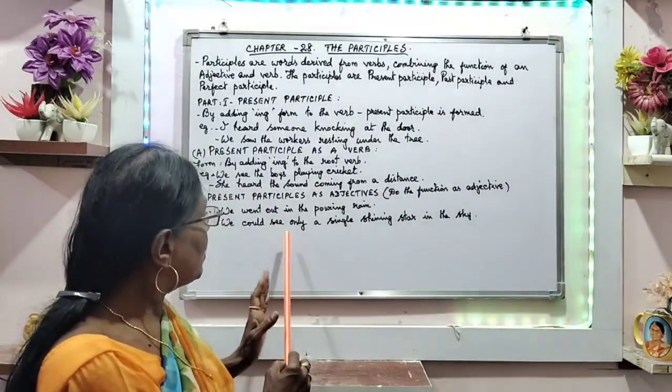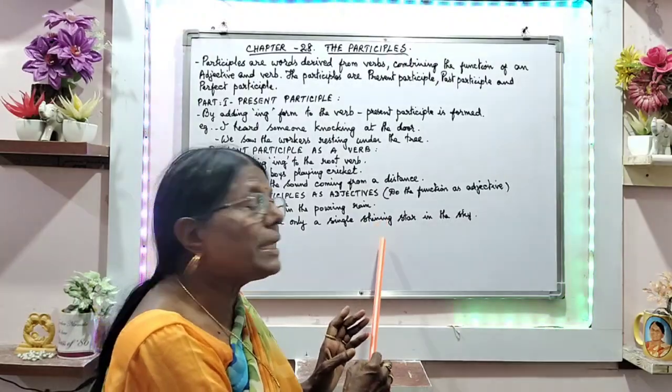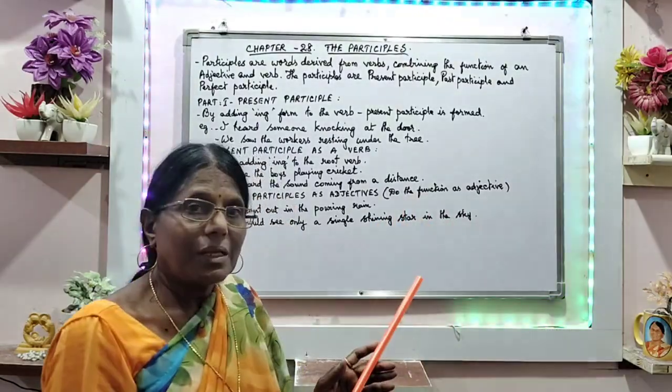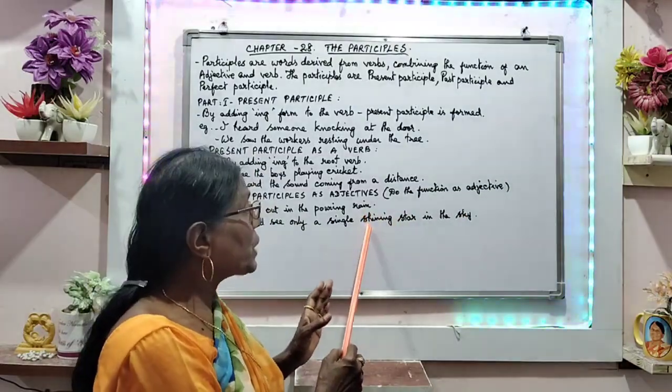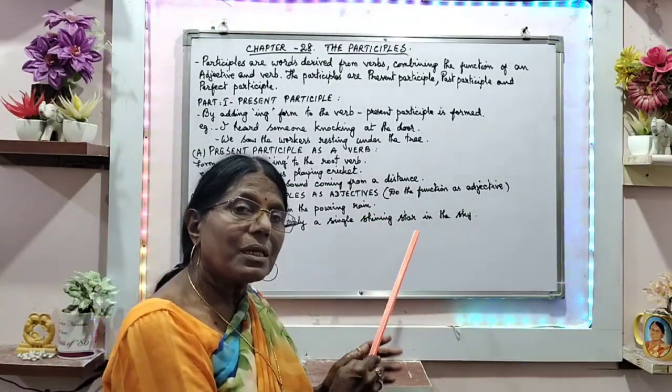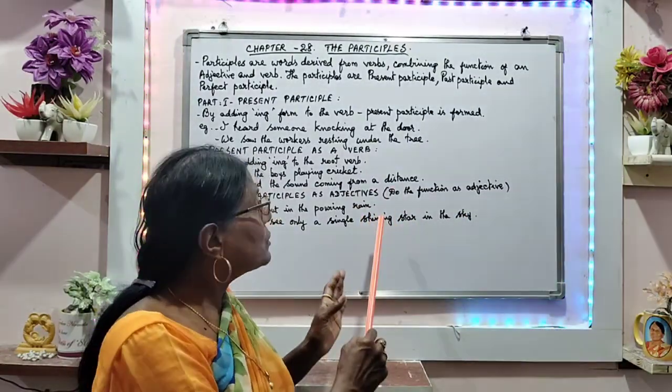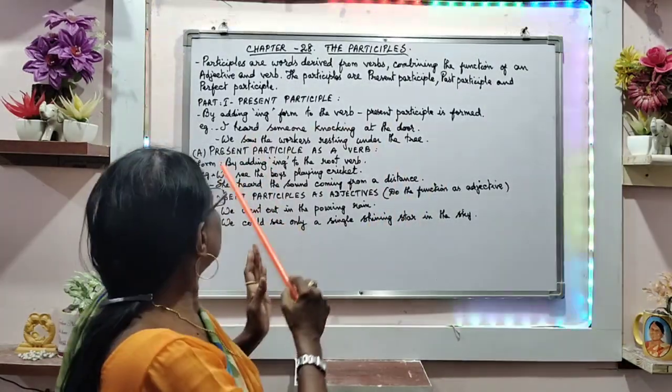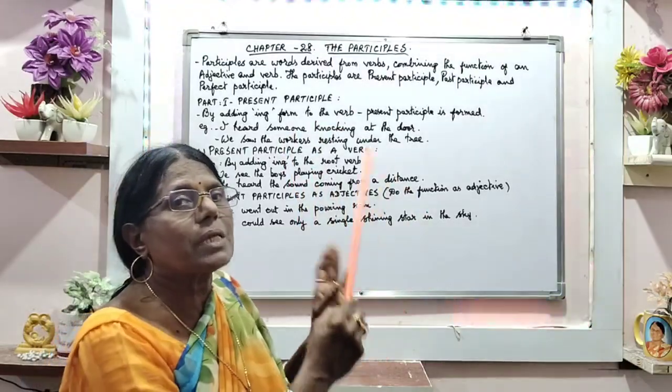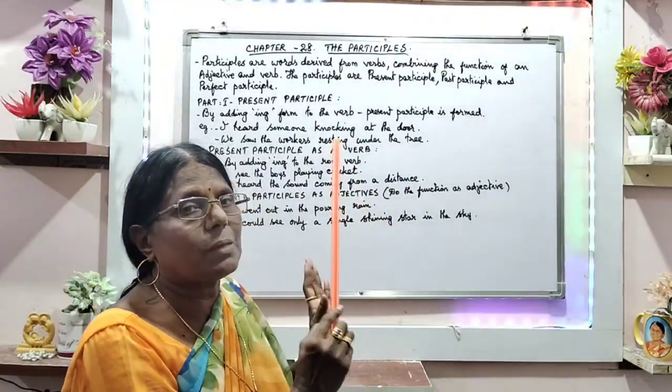We could see only a single shining star in the sky. Star is a noun, and the word shining is doing the job of an adjective. That is the present participle used as adjective, for an example.